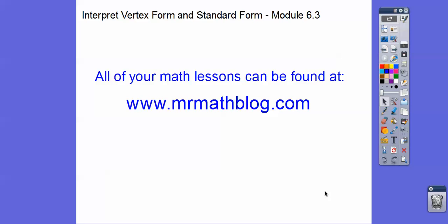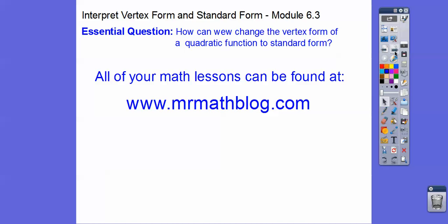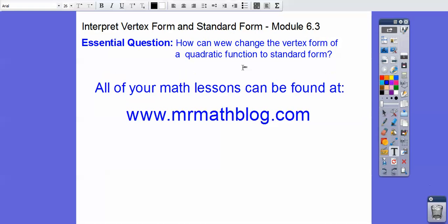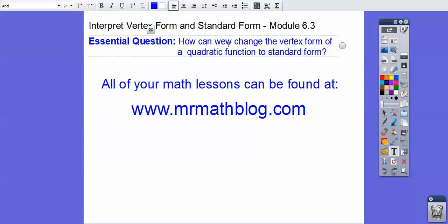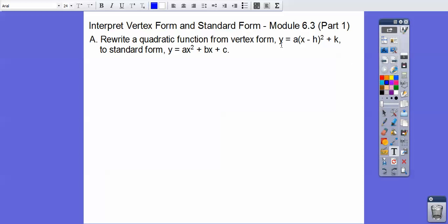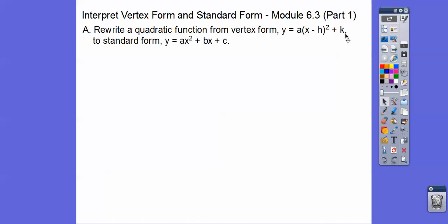and standard form. So this is just one lesson for module 6-3, and don't forget all your lessons can be found at MrMathBlog.com. How can we change the vertex form of a quadratic function to standard form? So here's vertex form right here: Y equals A times X minus H quantity squared plus K. Do you remember that in the last lesson where the vertex is at H, K? And then so standard form is Y equals AX squared plus BX plus C.